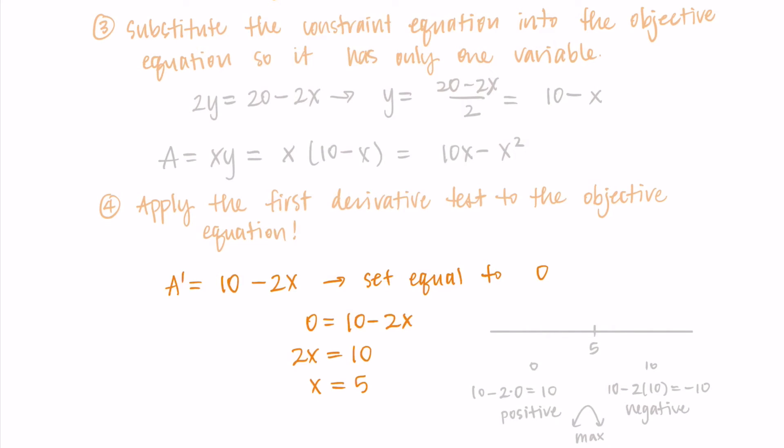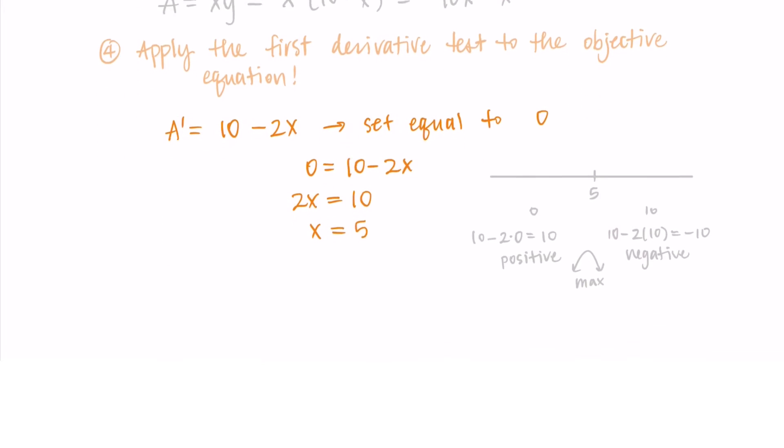So we know that x = 5 is one of our dimensions we want to get the maximum area. Now we just need to solve for the other variable - we need an x and y. So I plug in 5 for x in my formula that said y = 10 - x, and I'm getting that y is also 5.